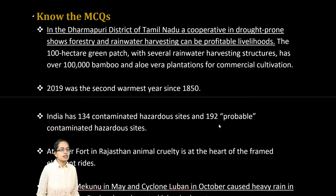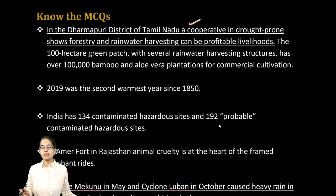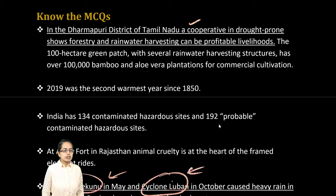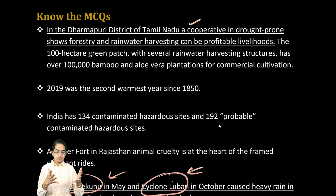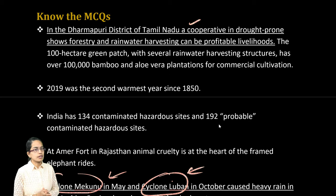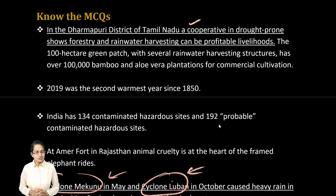From important MCQs, locust is a very important topic, along with arsenic contamination — the proportion, probable sites, and contaminated sites. Cyclone Mikunu and Cyclone Lubang are also important — these cyclones led to severe flood conditions and creation of lakes and deserts in the Arabian Peninsula. Those were the key highlights from this edition. Stay tuned and have a wonderful evening.